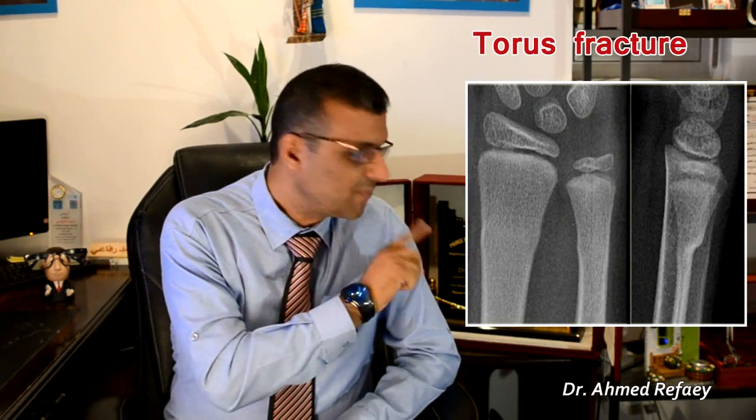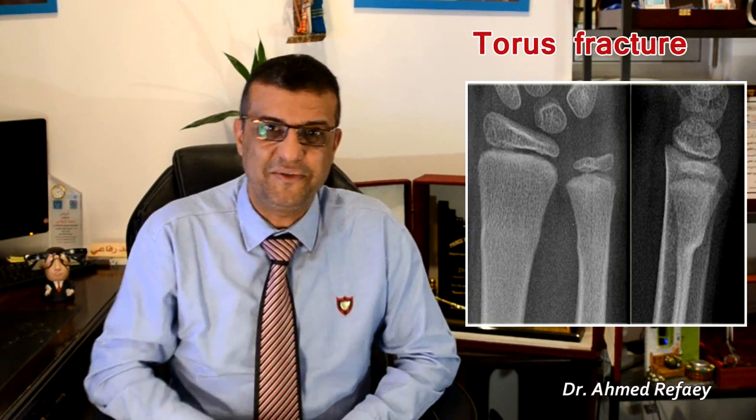Torus fracture, also known as buckling fracture, is an incomplete fracture of the shaft of a long bone with no distinct fracture lines, but only bulging or angulation of the cortex, as seen in this image.